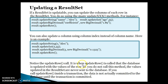Notice the updateRow call — it is when updateRow is called that the database is updated with the values of the row. If you do not call this method, the values updated in the ResultSet are never sent to the database. You can set values all you want, but without calling updateRow, the update will not happen on the database side.